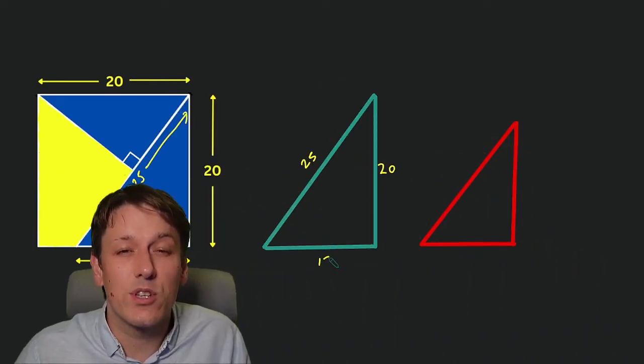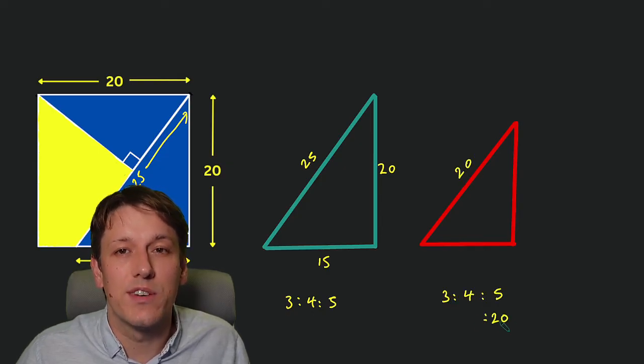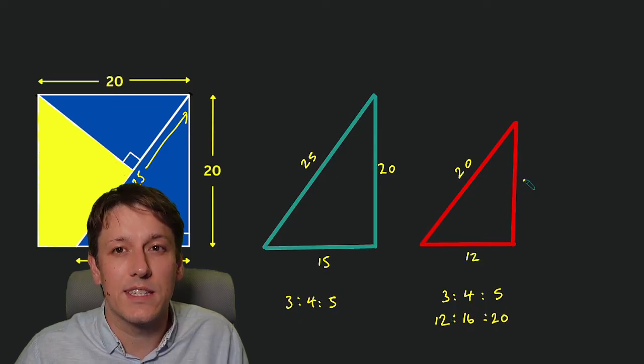And the side lengths of similar triangles are in the same ratio, so the red triangle here must also be a 3-4-5 triangle. And the 20 would correspond to the 5 here, so the other side lengths would be 12 and 16.